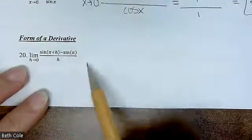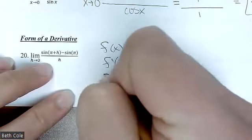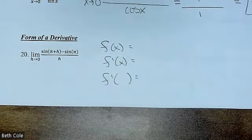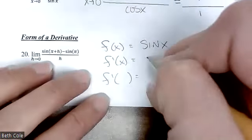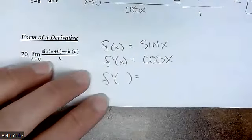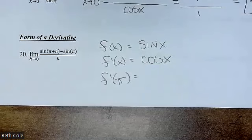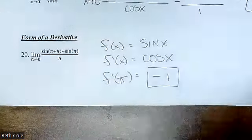You do not want to do this as a limit. Instead, recognize that it means a derivative — it's the x plus h pattern. What's the function? Sine. The derivative is cosine. What are we plugging in? It's not zero — it's pi. Here's the unit circle — where's pi? That's the point negative one, comma zero. Cosine is the x part, so the answer is negative one.